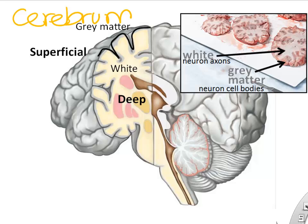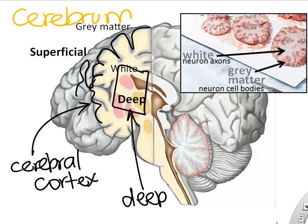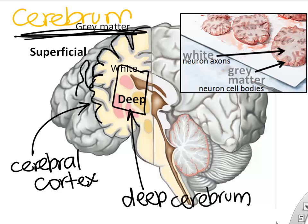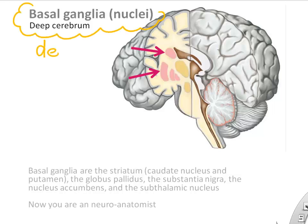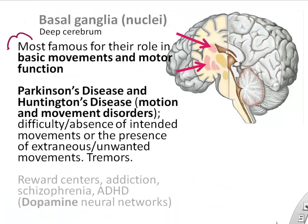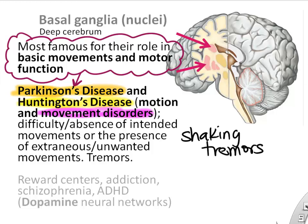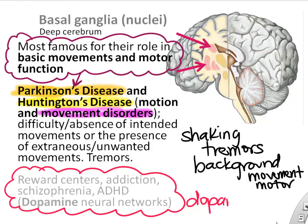The most famous part of the cerebrum is the cerebral cortex — its outer part. There are also deep cerebral regions buried underneath. One of the more famous deep cerebrum areas is the basal ganglia (also called basal nuclei), which are important in movement and background muscle movements. Probably best known because of diseases like Parkinson's disease and Huntington's disease, where shaking and tremors result from damage to the basal ganglia. The basal ganglia also contain the dopamine reward centers involved in diseases like ADHD.